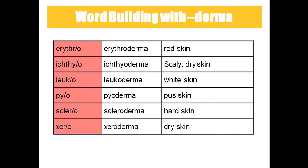Coming to the suffix -derma: erythroderma means red skin. Ichthyoderma means dry or scaly skin. Leukoderma means white skin. Pyoderma means pus skin. Scleroderma means hard skin. Xeroderma means dry skin.